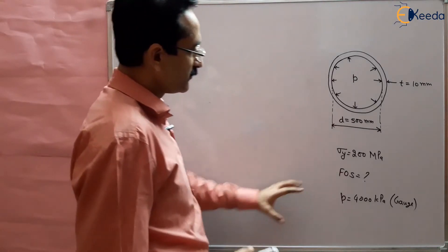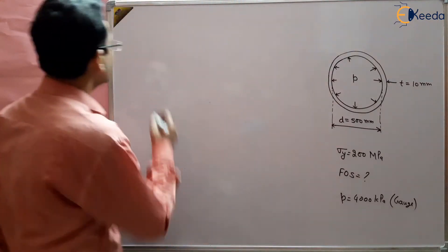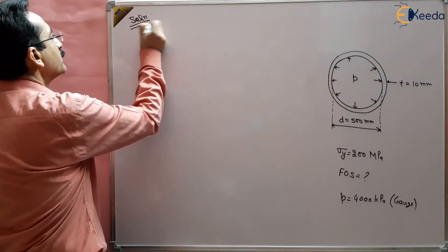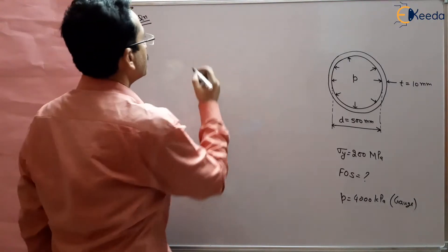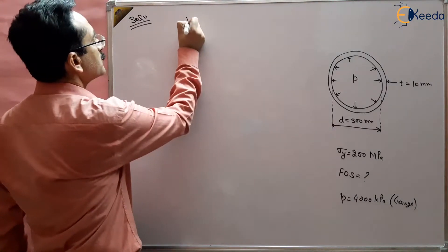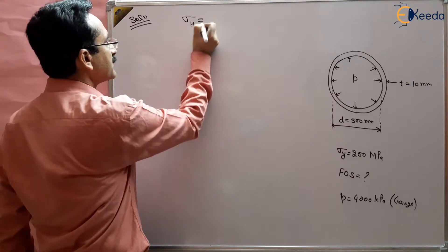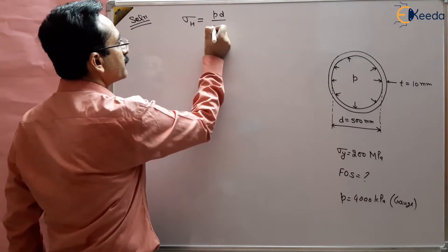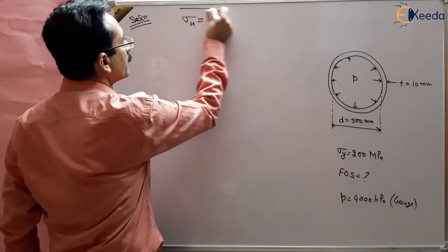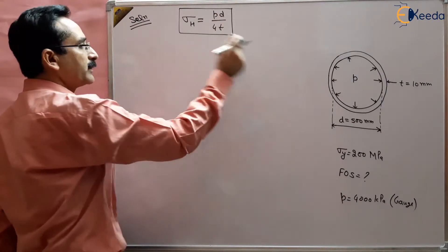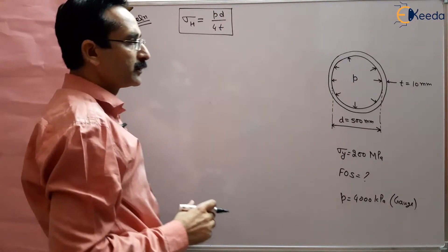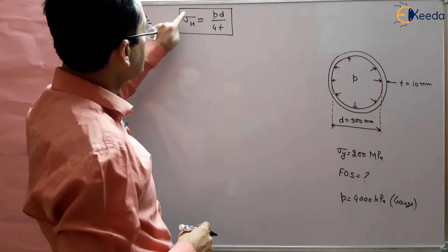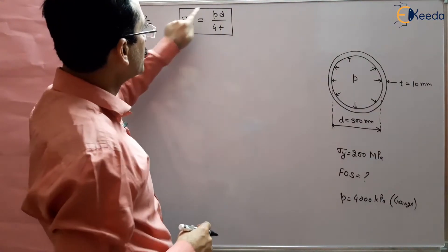To find the factor of safety, we know that the hoop stress for a spherical vessel is given by pd/4t. This formula you should remember — pd/4t is the hoop stress in a spherical pressure vessel, and the stress should not exceed this hoop stress limit.